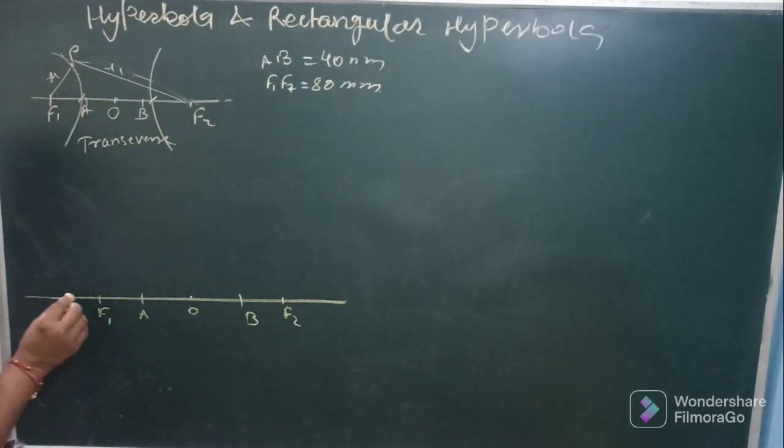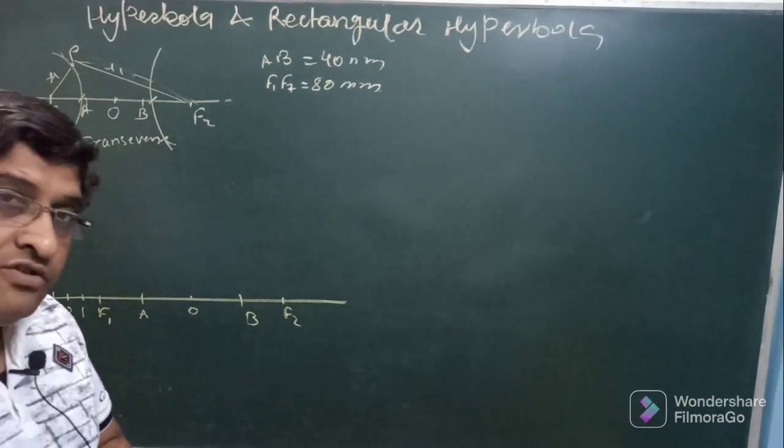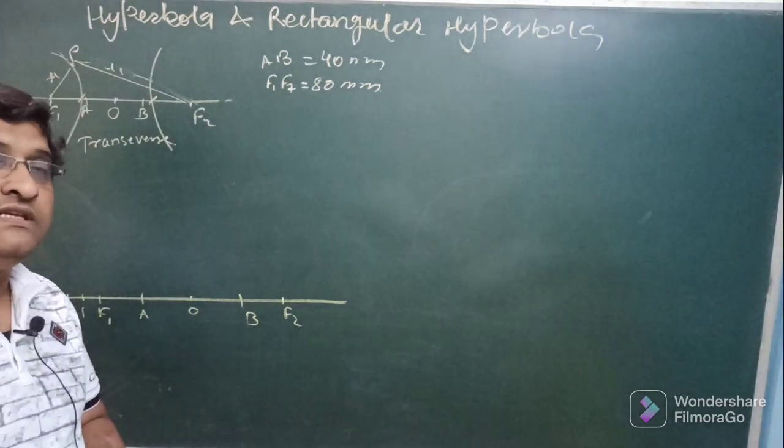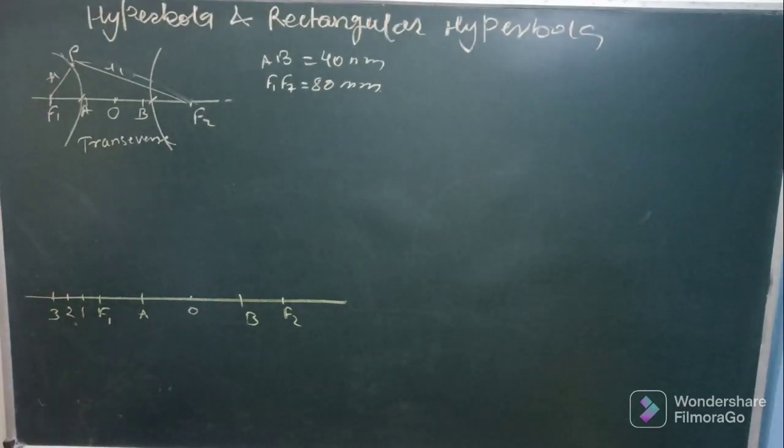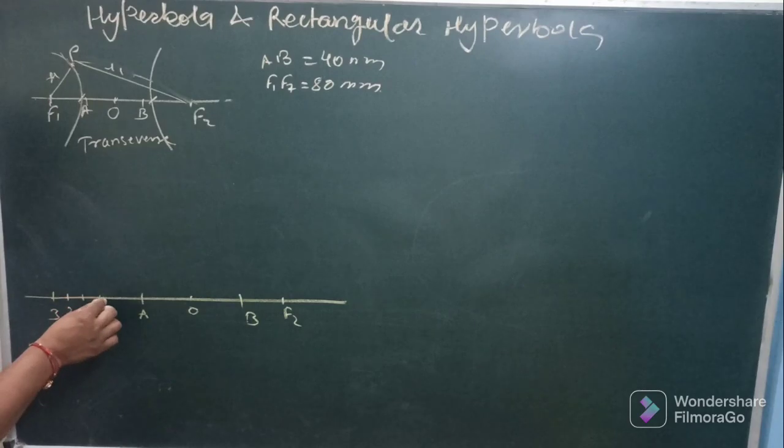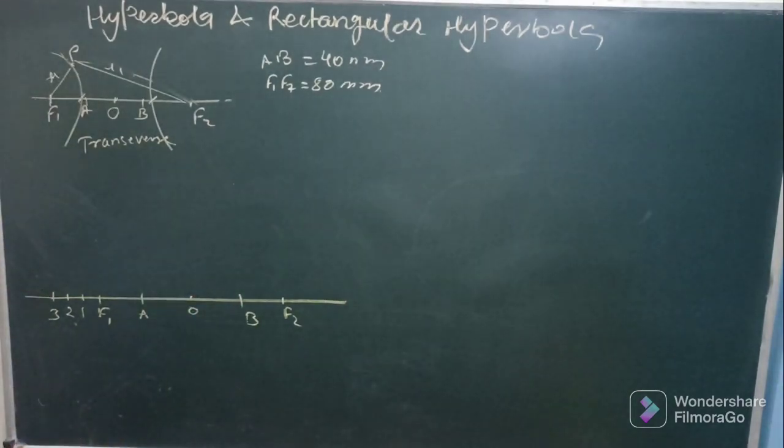Then take some points towards left of f say 1, 2, 3 arbitrarily, these points may or may not be equal. Basically, we are using the intersecting arcs method or arcs of circles method which we have used in construction of ellipse using specific methods. This is the same method with a little bit difference.